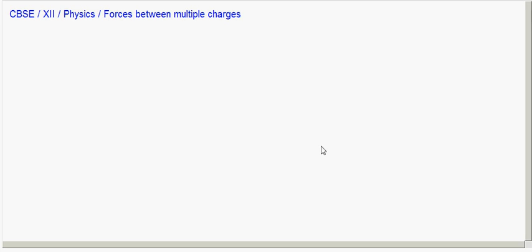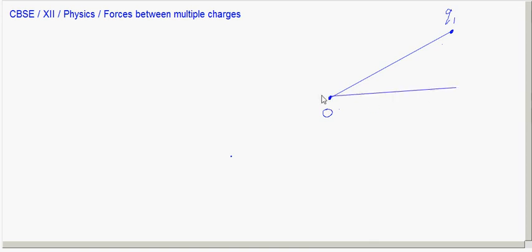Let us understand this by considering an example. Consider a system with three charges. Let O be the origin. We have charge Q1 at a distance R1 from the origin, charge Q2, and charge Q3 at a distance R3 from the origin. These R1, R2, R3 are all vectors.